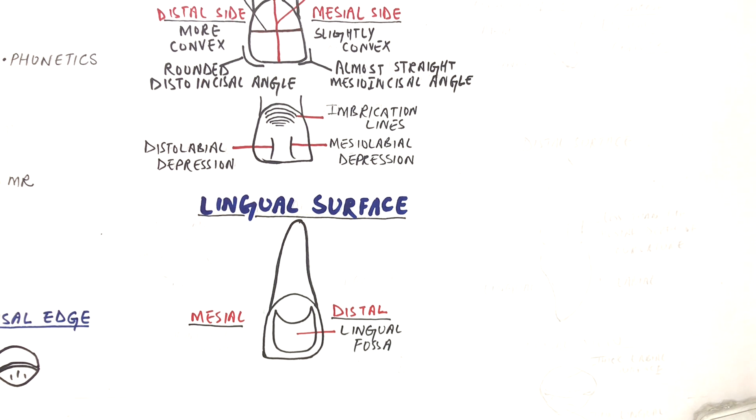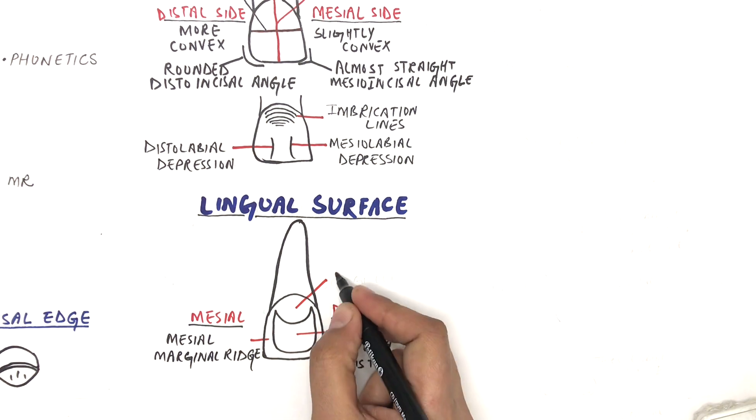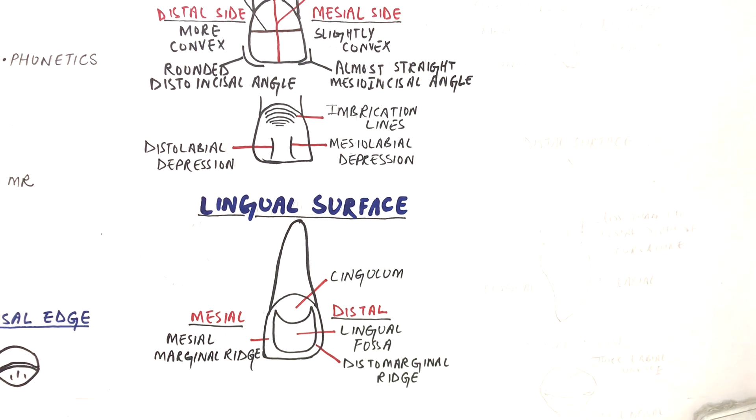The concavity is bordered mesially and distally through mesial and distal marginal ridges. The cervical one third of the crown is convex and this convexity is termed cingulum. The cingulum is confluent with the mesial and distal marginal ridges.